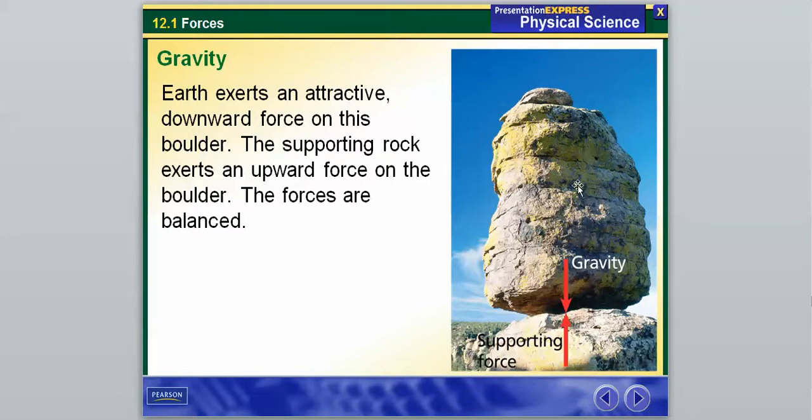If the forces were not balanced, this boulder would be tumbling over or shooting off into space, which we know would not happen. The forces are balanced, and that means there's no motion occurring. This boulder's not going to fall. There's the downward force of gravity trying to pull it down to the Earth, and then the supporting force is being exerted from this rock.